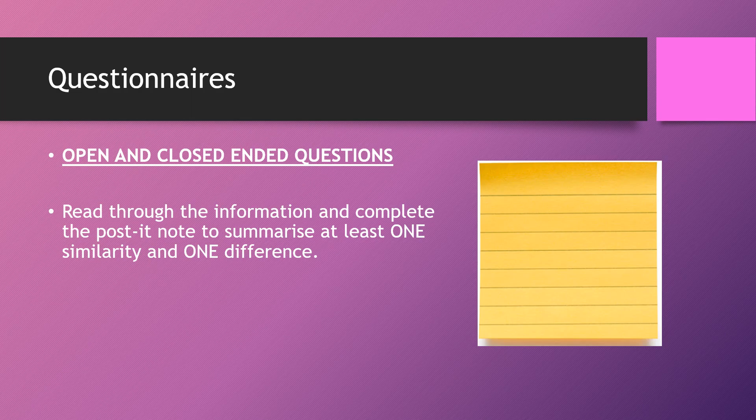Open questions allow the participant to give a substantial amount of detail. They usually start with phrases like 'what is your opinion about,' 'how do you feel about,' 'what would you do in the following situation,' or 'explain why you gave the answer above.' It's about getting opinion, detail, depth, and qualitative content. Review the strengths and weaknesses on pages 74 and 75, highlight the key points, then note one similarity and one difference between open and closed questions on a post-it note.